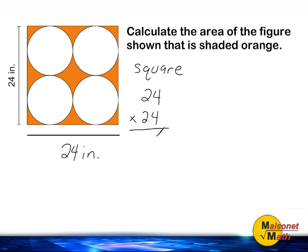So first we are going to begin by multiplying 24 times 24 and 24 times 24 gives us a product of 576. So if the entire square were shaded orange, it would have a coverage of 576 square inches.